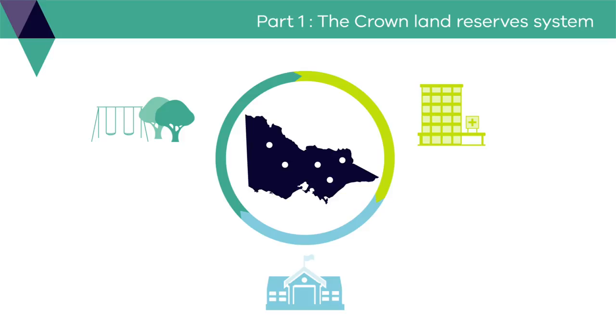The department represents the government and therefore represents the landowner of the reserve. Many Crown Land Reserves are managed by local councils or Parks Victoria. In addition, more than 1500 Crown Land Reserves are managed by 1200 local committees of management.